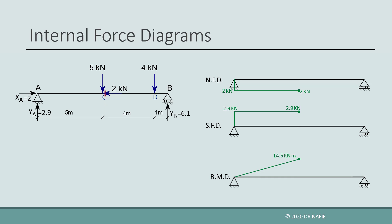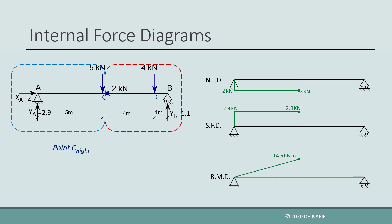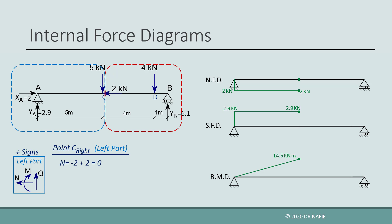Next, we move to the point just to the right of point C, still using the left part. Note that the 2 kN horizontal force applied at point C belongs to the left part since point C is part of that part. Therefore, the normal force is the sum of XA and the 2 kN force, which equals zero. The shear force is the sum of all vertical forces in the left part — YA and the 5 kN force — giving −2.1 kN. The bending moment about C remains +14.5 kN·m as before.